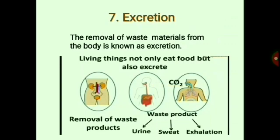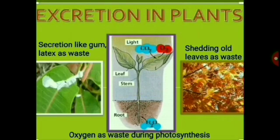Our seventh characteristic is excretion. The removal of waste material from the body is known as excretion. It is very important to excrete waste from the body so it cannot harm us. In humans and animals, the removal of waste is done through urine and feces, through sweat, or through exhalation. In the case of plants, they excrete waste through oxygen produced during photosynthesis, through the secretion of gums, latex, and resins as waste, and also through shedding old leaves as waste material.